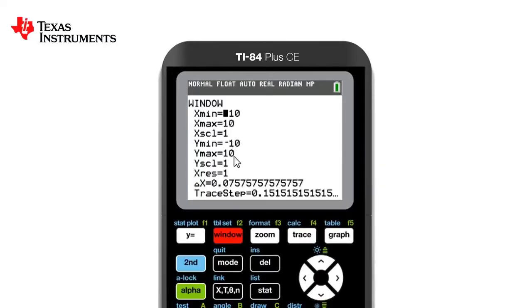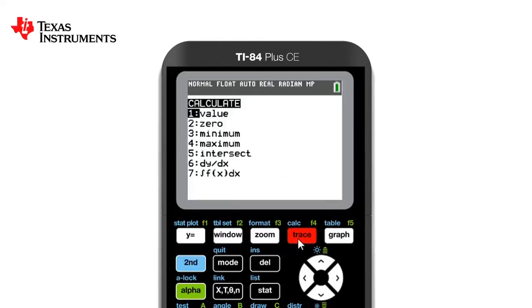If we go back into the calculate setting again, we can see that number three is the minimum and four is the maximum. The process to find these two values is the same as what we did for zero. But number five is the intersect. This will tell us where two graphs cross.